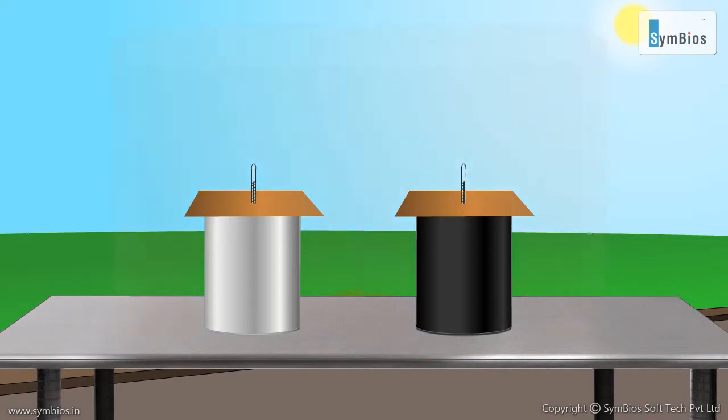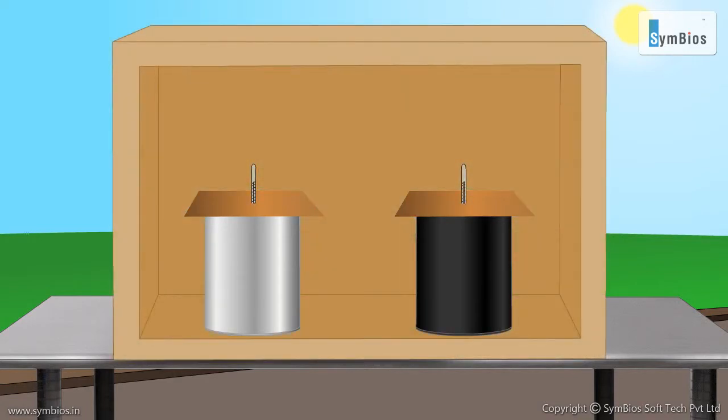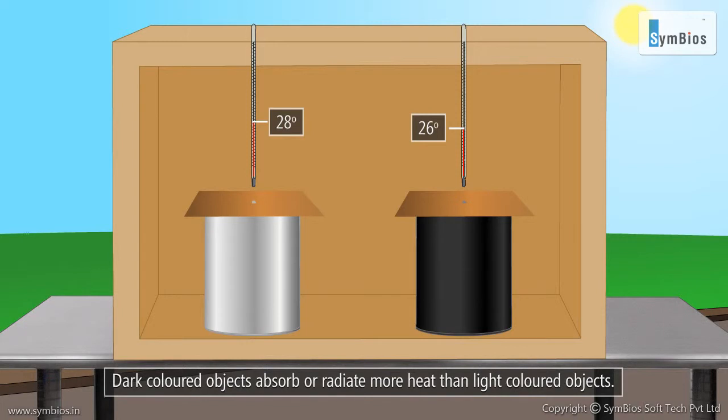Now, if the same cans are kept under a shade, the water in the black can cools faster. This is because it radiates more heat to its surroundings. Therefore, dark colored objects absorb or radiate more heat than light colored objects.